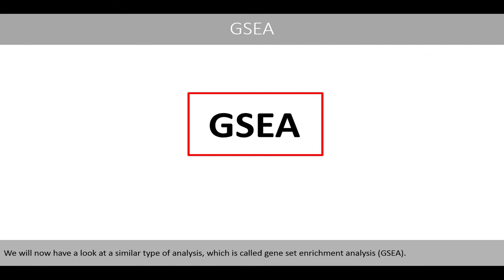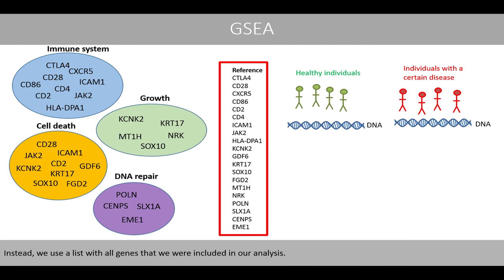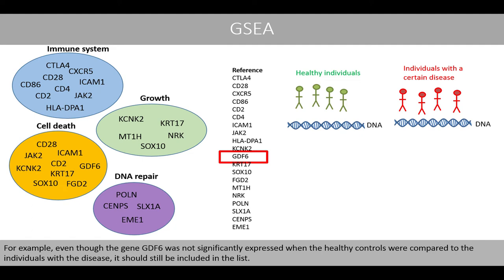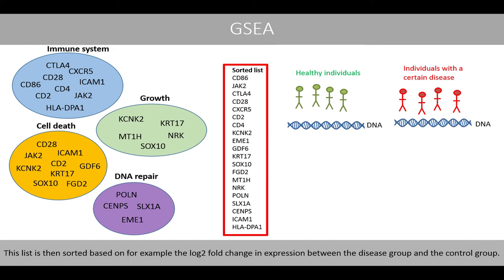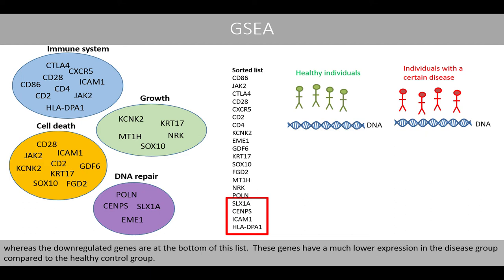We'll now have a look at a similar type of analysis called Gene Set Enrichment Analysis. In Gene Set Enrichment Analysis, we do not use a list of genes extracted based on some previous analysis. Instead, we use a list of all genes that were included in our analysis. For example, even though the gene GDF6 was not significantly expressed when the healthy controls were compared to the individuals with the disease, it should still be included in the list. The list is then sorted based on, for example, the log2 fold change in expression between the disease group and the control group. Genes at the top of this list are therefore upregulated genes with much higher expression in the disease group, whereas the downregulated genes are at the bottom of this list.